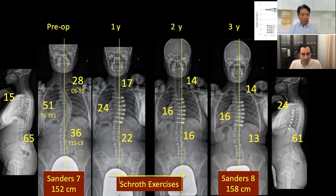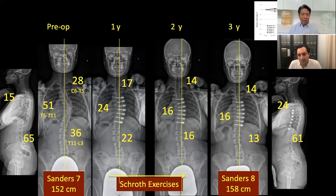Have you noticed any correlation between patients who have done scoliosis-specific exercises like Schroth post-surgery in terms of better corrections, more stability, or less tether breaks? We still don't know. But we try to incorporate preoperative and postoperative scoliosis-specific exercises in almost all cases. Many of our cases also used bracing at some point. For most, it's a combination of all these techniques.